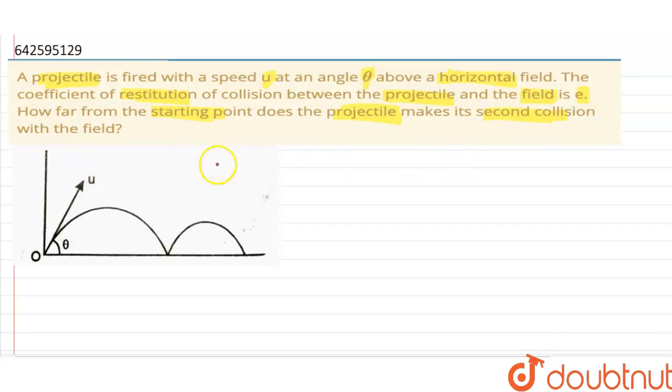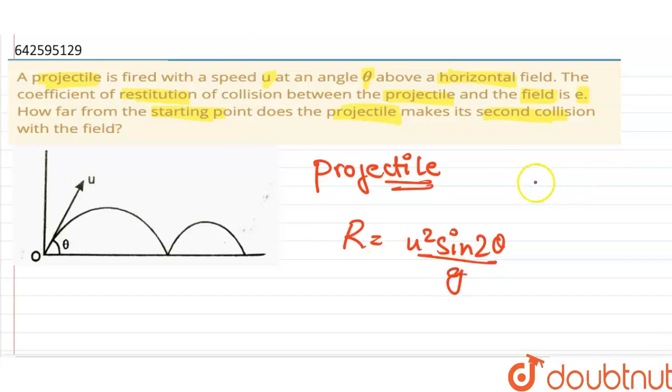Okay, so in this question, we are going to discuss about the projectile motion. We know the formula for range is u square sine 2 theta by g. Okay, and we also know this comes from the formula 2 u x u y upon g. Okay, so this is where the formula comes from.